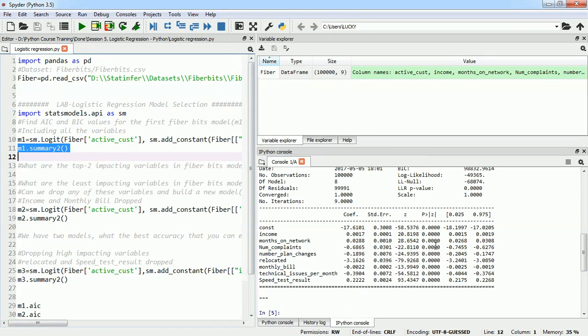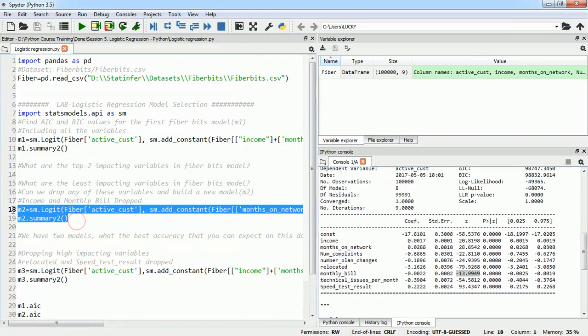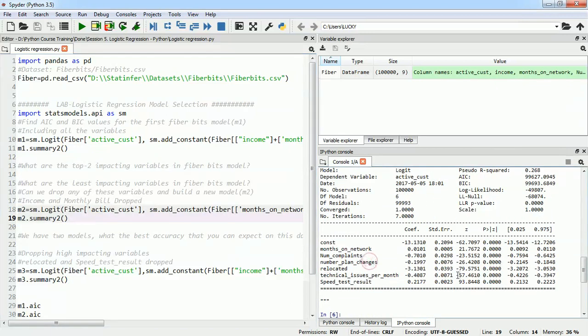From here I can see that income is less impacting and monthly bill is also least impacting. So these two variables I will just drop out of my model and build model number 2. Model number 2 I am building with income and monthly bill dropped. Looking at the summary of this model, I can see that relocated has high values and speed test result also contains high value of importance, looking at the z-value.